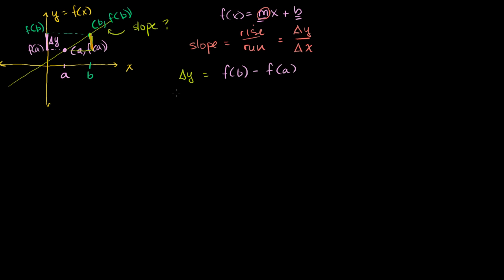Now what is your change in x? The slope is change in y over change in x. We're taking this upper point as the first point, so to be consistent we take its x minus the other point's x. This point's x-coordinate is b, so it's going to be b minus a. And just like that, if you had the coordinates of these two points, you would plug them in and get your slope.